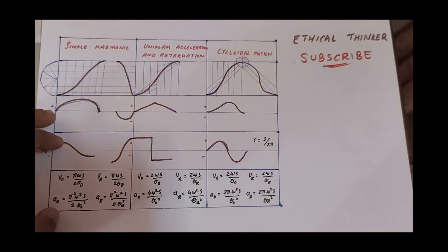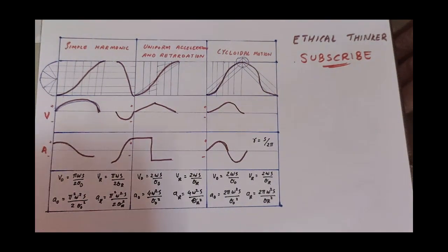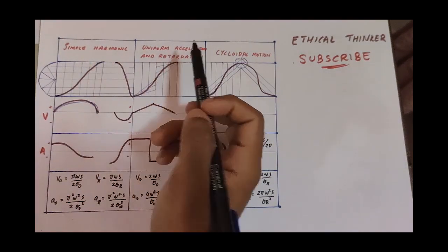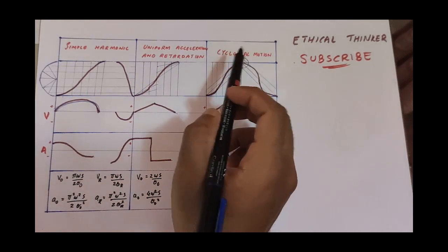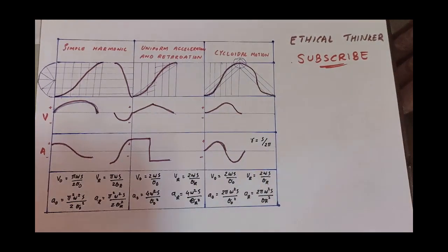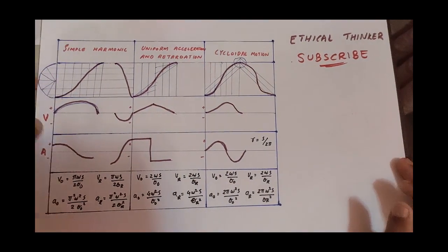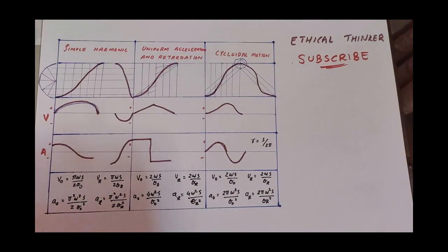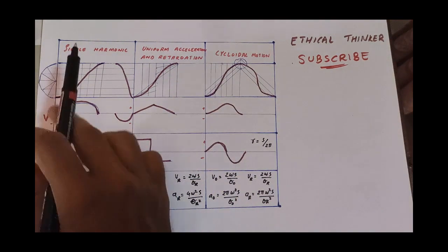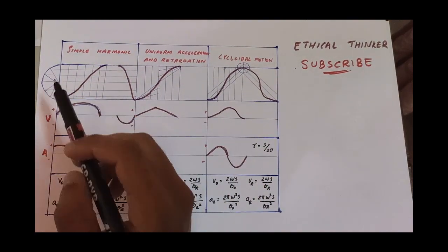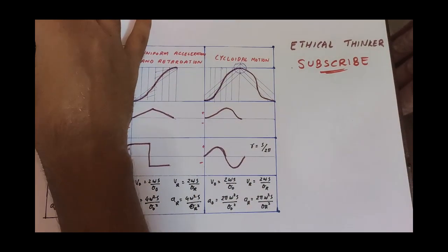The motions of followers are: simple harmonic motion, uniform velocity motion, uniform acceleration, retardation, and cycloidal motion — these four motions are standard. Uniform velocity motion is not commonly used in problems. We will discuss these types, and simple harmonic motion is the most common — we will discuss this type of motion.